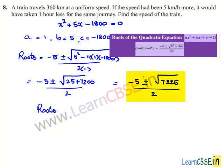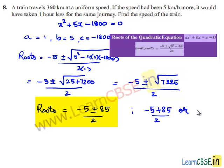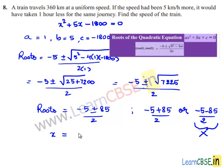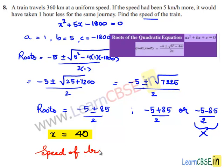The roots are: minus 5 plus 85 divided by 2, or minus 5 minus 85 divided by 2. Since the speed cannot be negative, the second value is ignored. So x equals minus 5 plus 85 divided by 2, which is 80 divided by 2, which equals 40. Therefore, the speed of the train is 40 km per hour.